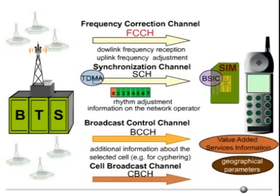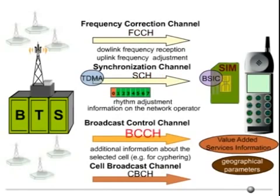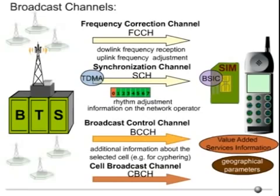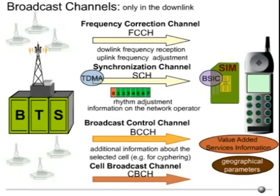The FCCH, SCH, BCCH, and CBCH are broadcast channels and exist only in the downlink. They are the first logical channels belonging to the common channels.